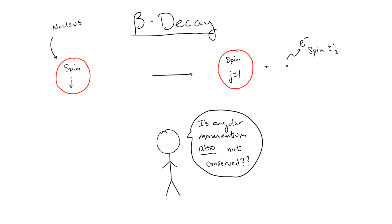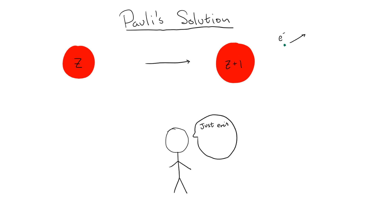That was, of course, until 1930 when Wolfgang Pauli proposed an interesting solution. All of this discussion has been based on the assumption that only a single particle is emitted during beta decay. So, what if there is another particle which is emitted? If this is the case, then this new particle must satisfy several properties.